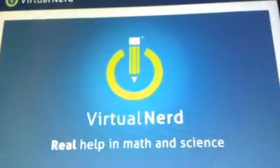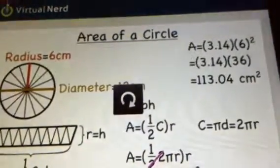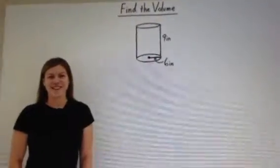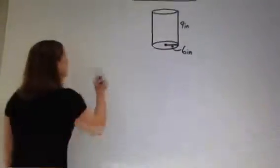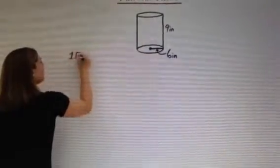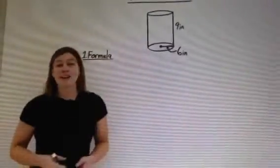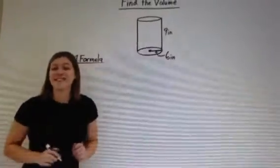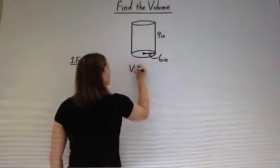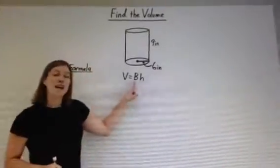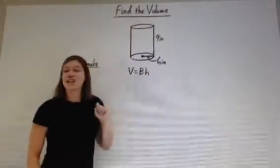Now here is a video on the volume of a cylinder. Let's find the volume of this cylinder. To find the volume of a cylinder, start by writing down the formula: the volume of a cylinder equals the area of the base times the height. Here, b is the area of the base and h is the height.